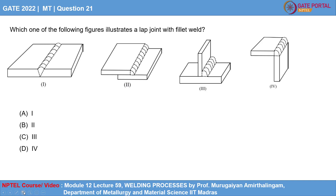Gate 2022 Metallurgical Engineering Question 21 asks which of the following figures illustrates a lap joint with a fillet weld. Four joints are shown, and we have to identify which one represents a lap joint with a fillet weld. Let us go through them one by one.